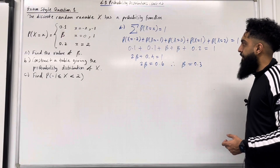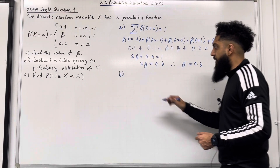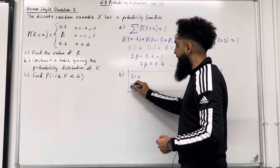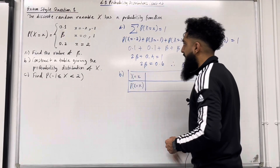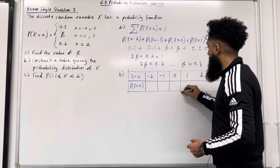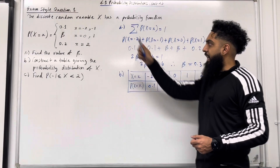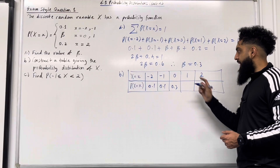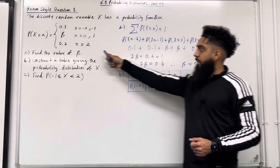Let's have a look at part B: construct a table giving the probability distribution of X. Here is the table with two rows — the first row represents X = x and the second row represents P(X = x). X takes on values -2, -1, 0, 1, and 2. The probabilities are 0.1, 0.1, 0.3, 0.3, and 0.2 respectively.